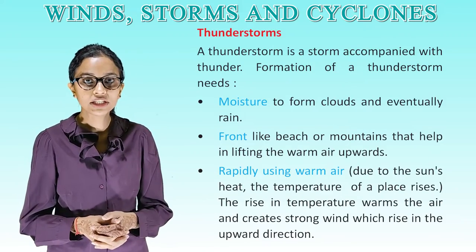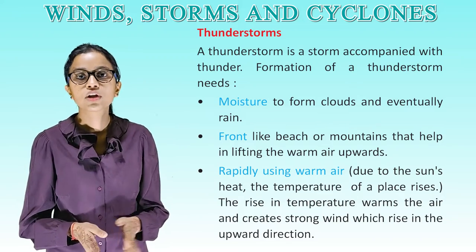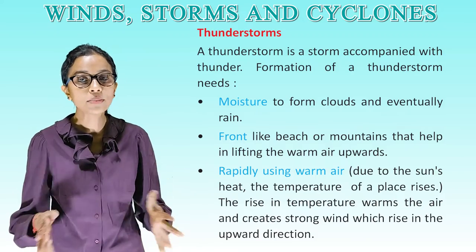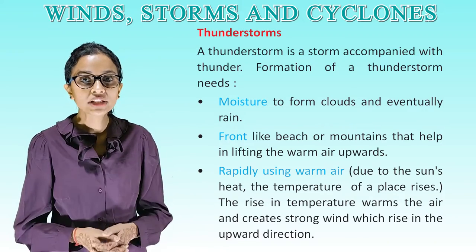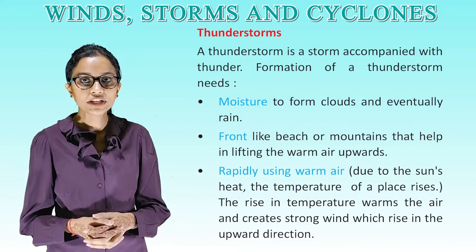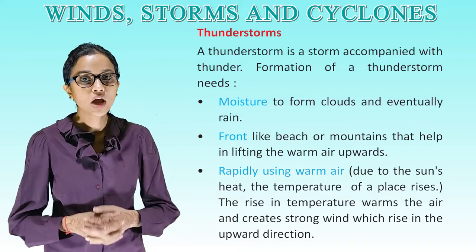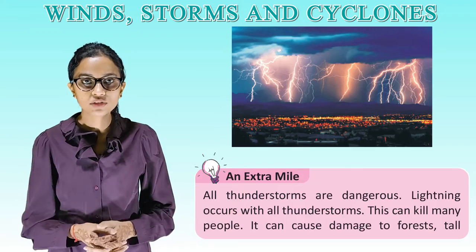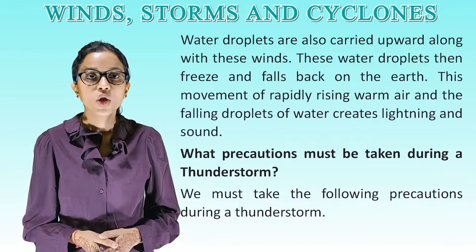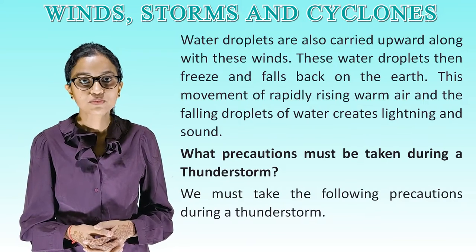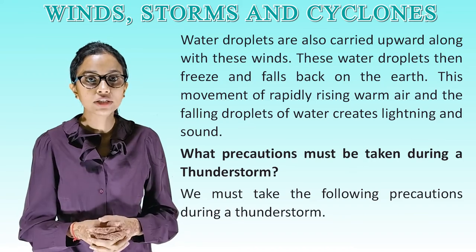Thunderstorms: A thunderstorm is a storm accompanied with thunder. Formation of a thunderstorm needs moisture to form clouds and eventually rain, a front like a beach or mountains that helps in lifting the warm air upwards, and rapidly rising warm air due to the sun's heat. The rise in temperature warms the air and creates strong winds which rise upward. All thunderstorms are dangerous — lightning occurs with all thunderstorms and can kill people and cause damage to forests. Water droplets are carried upward along with these winds, then freeze and fall back to earth. This movement of rapidly rising warm air and falling water droplets creates lightning and sound.